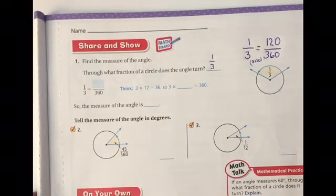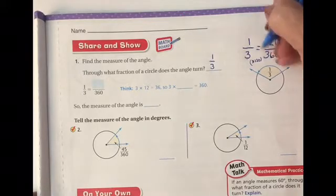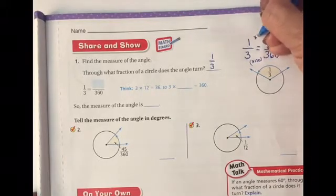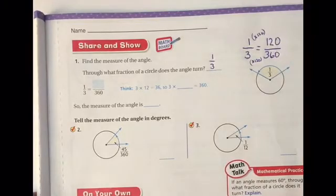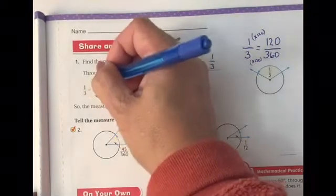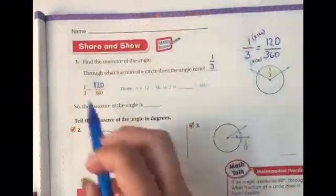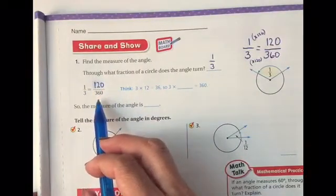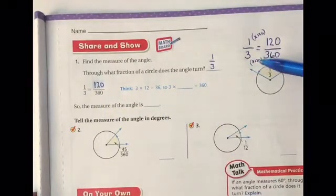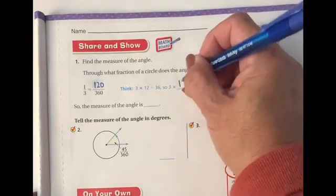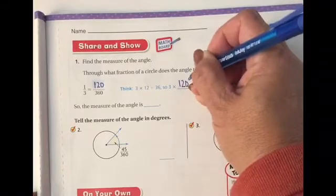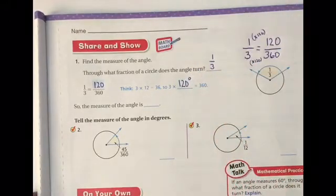So now I know 3 times 120 equals 360. And whatever I do to the bottom, I have to do to the top. So 1 times 120 equals 120. So now I'm going to put 120 over here. So 1/3 equals 120/360. This means that 1/3 of the circle is 120 degrees. Pretty easy, huh?